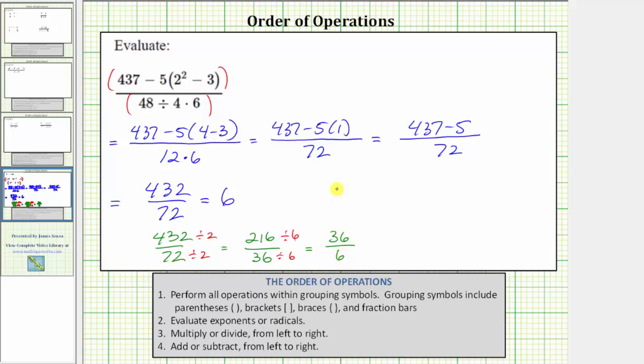And 36 and six also share a common factor of six. Thirty-six divided by six equals six. Six divided by six equals one.